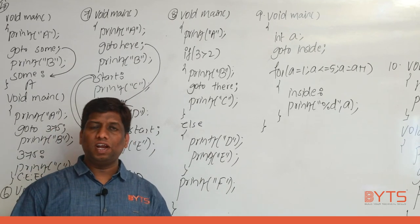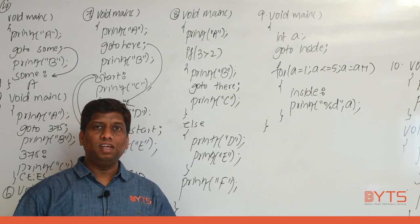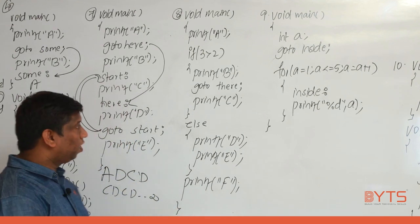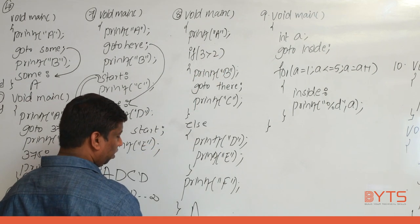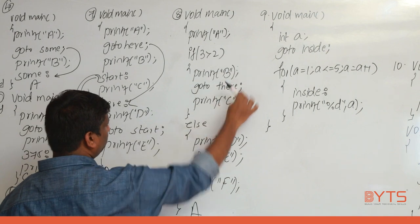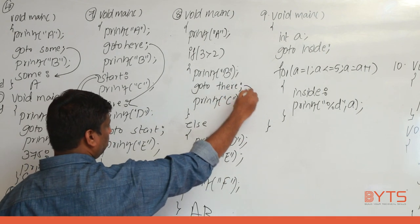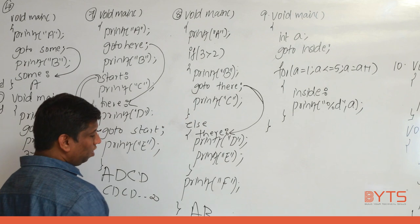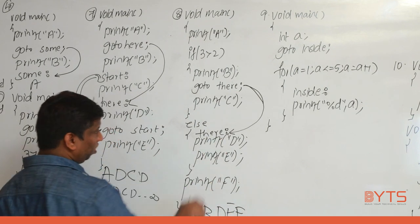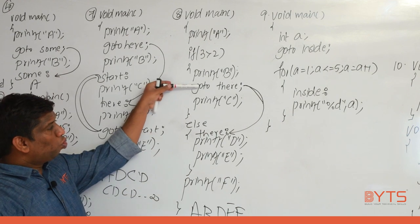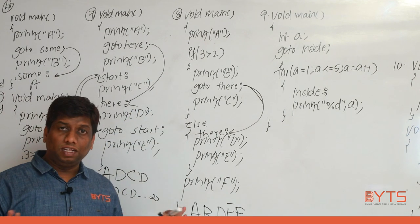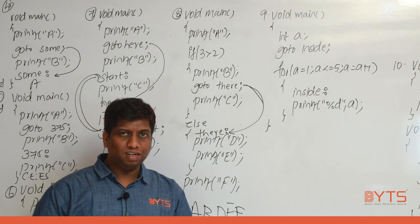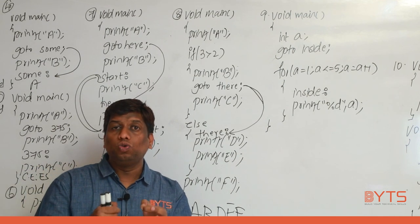An interesting interview question: can you execute both the if-body and the else-body? Yes, using goto. First A is printed, 3 > 2 is true, B is printed, then goto 'there' — jumping over the else body — and D, E, F are printed sequentially. So goto lets you jump anywhere without restriction, which can be dangerous behavior.